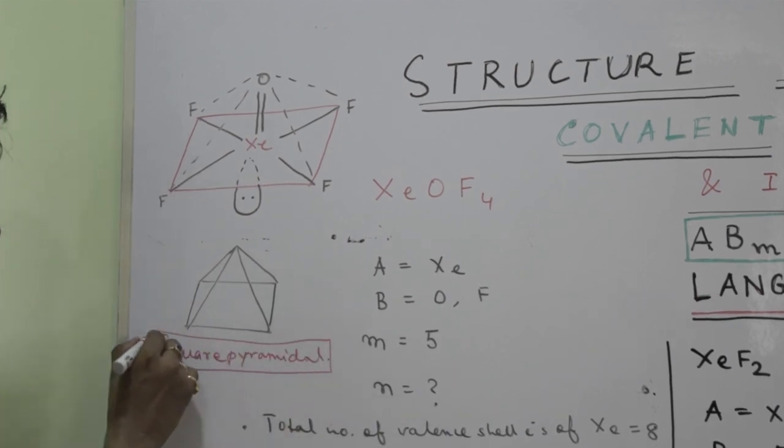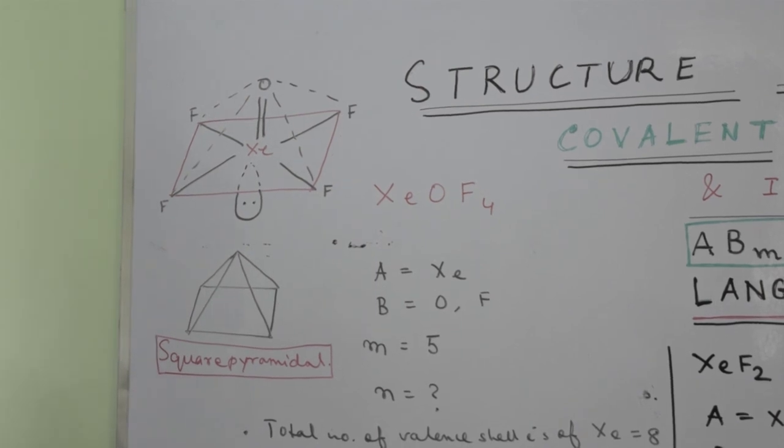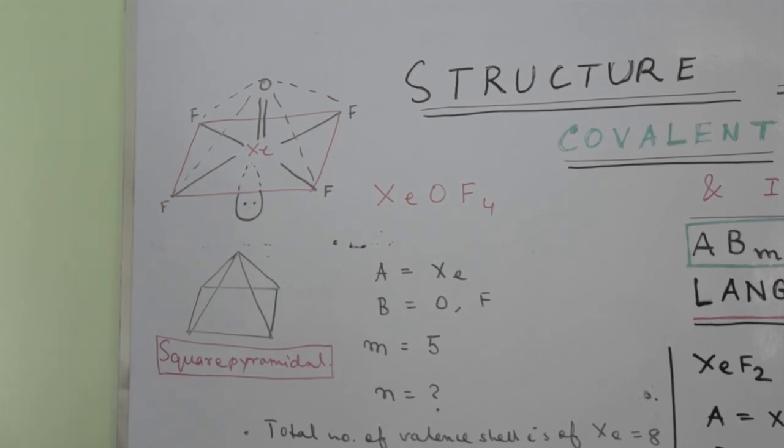So here is the Langmuir's formula. It is very unique. You can find the hybridization, you can find the structure.